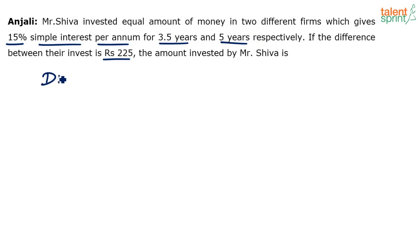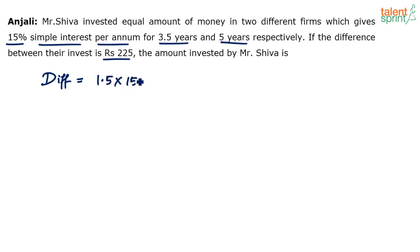The difference comes down to how much interest is earned over the extra time. The first firm gives 15% for 3.5 years, the second gives 15% for 5 years. The difference in time is 1.5 years, so the difference in interest is 15% applied to those 1.5 years.